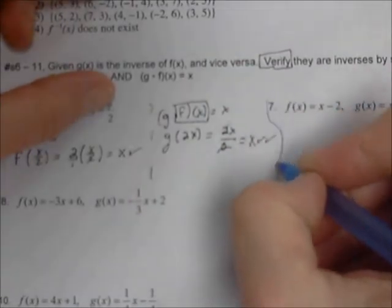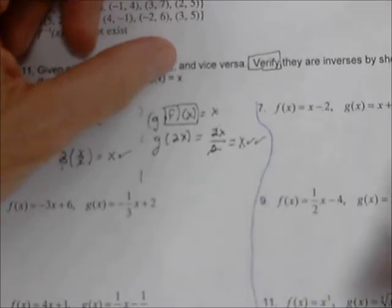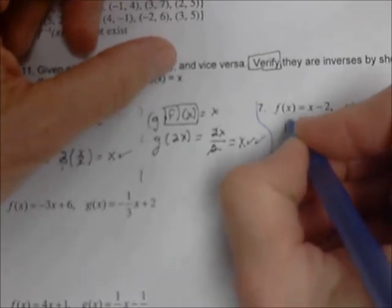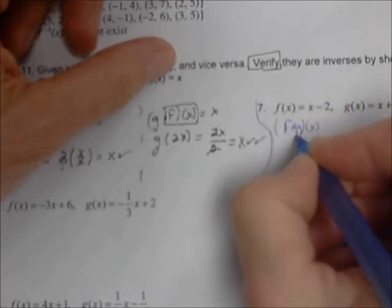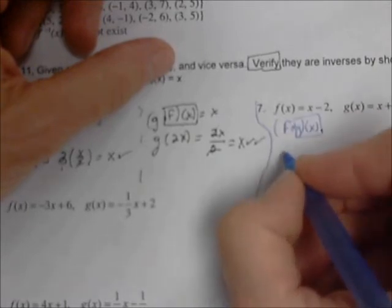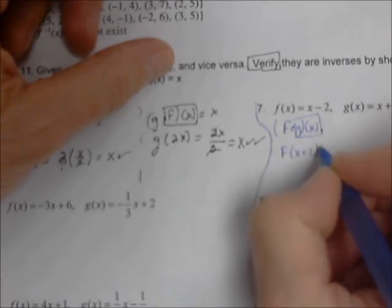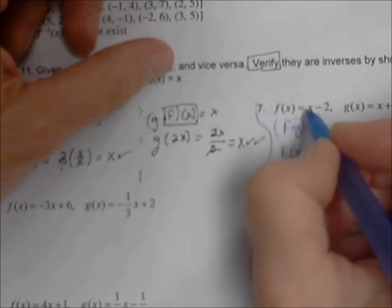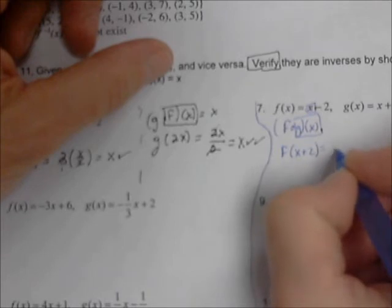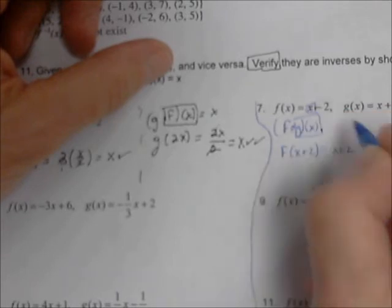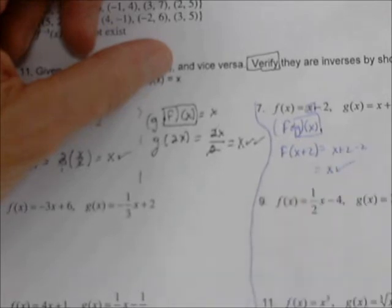For number 7, f(x) = x minus 2 and g(x) = x plus 2 are inverses of each other. Let's verify by doing f of g of x. g of x is x plus 2, so we find f of (x plus 2) — take out the x and replace it with x plus 2, giving (x plus 2) minus 2. Combining like terms gives x. That's the first half verified.